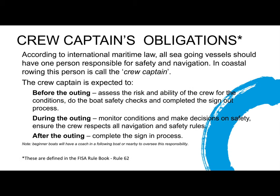In addition, according to international maritime law, all seagoing vessels should have one person responsible for safety and navigation. In coastal rowing, we call this person the crew captain. The crew captain has a number of expectations: before the outing, they assess the risk and ability of the crews to go out in those conditions, they do the boat safety checks and complete the sign-out process. During the outing, they monitor conditions and make decisions on safety to ensure all the crew respect the navigation and safety rules. After the outing, they are responsible for ensuring that the sign-in process is completed.